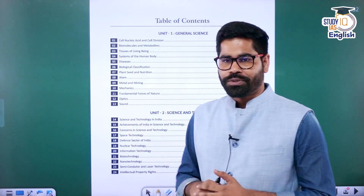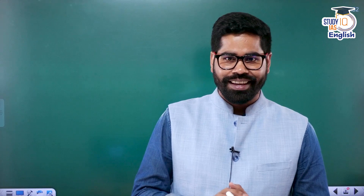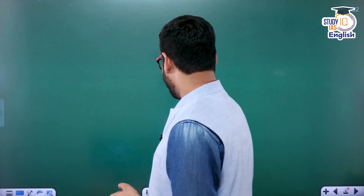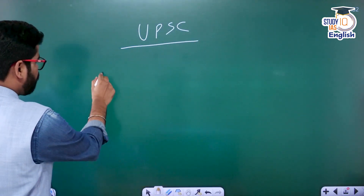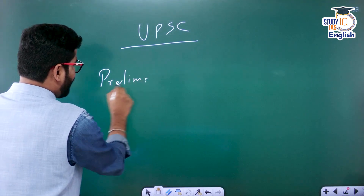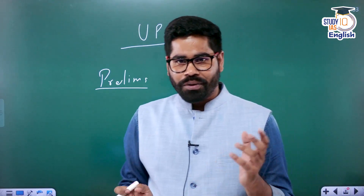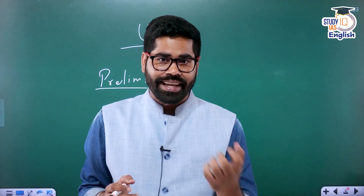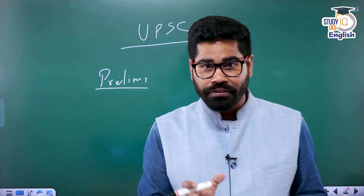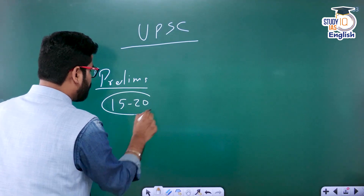Now before we go into that, let me first tell you about the weightage of science and technology in the examination. If we are talking about the UPSC examination, in the prelims section you will find that we have roughly around 15 to 20 questions on an average from the science and tech section. Some questions come from the core concepts of science and tech and then there are also some related current affairs portions.